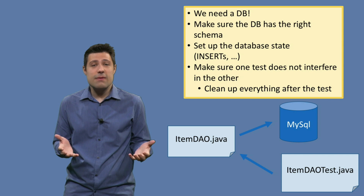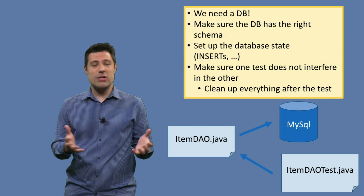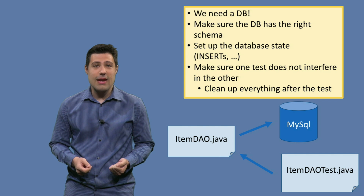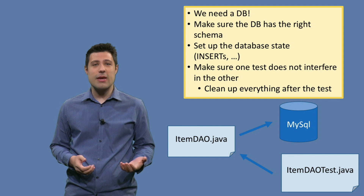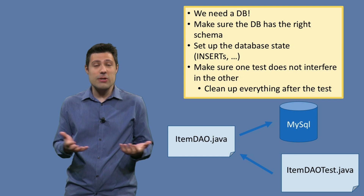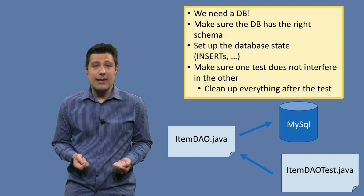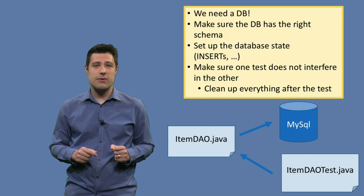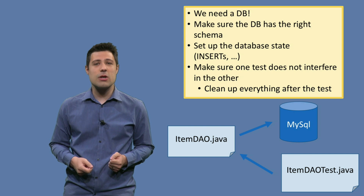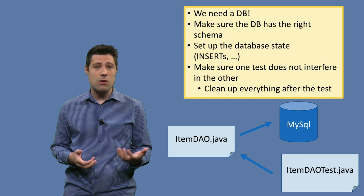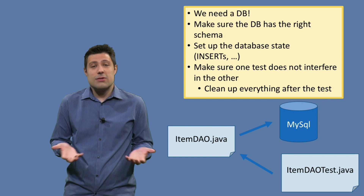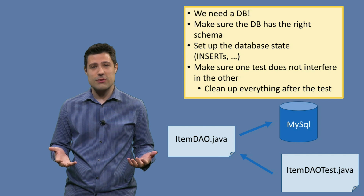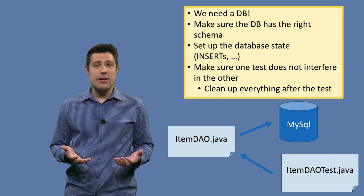While the advantage is that you're really testing an important interaction of your system, the disadvantage is that it's just more complicated than a unit test. If you're doing an integration test with a database, you need to set up a database in the first place to make the test work. Then you need to make sure that the database has the right schema, meaning it needs to be correctly configured for your test. You also need to insert rows into the database, because your test will probably require some data already. And since data stays in the database, after every test you need to make sure you clean up the database. So there's always more work to do when it's an integration test.